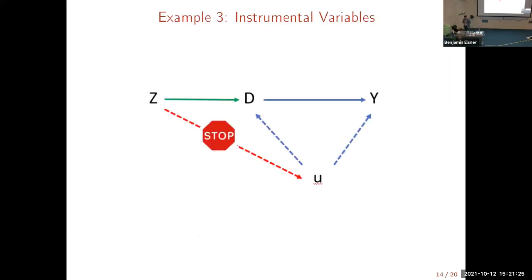I'm going to show you a third technique that is admittedly a little bit harder to understand. It's called instrumental variables. The idea is that we have this heterogeneity problem, but now we have a variable Z that determines the treatment but has no relationship with the error term. For example, if D is whether someone goes to the gym or not, I could run an experiment whereby I randomly give people vouchers to go to the gym for free. If I randomize those vouchers, that determines whether people go to the gym, and since the vouchers are randomized, whether you get one is independent of anything that determines your health. That's an example of an instrumental variable.